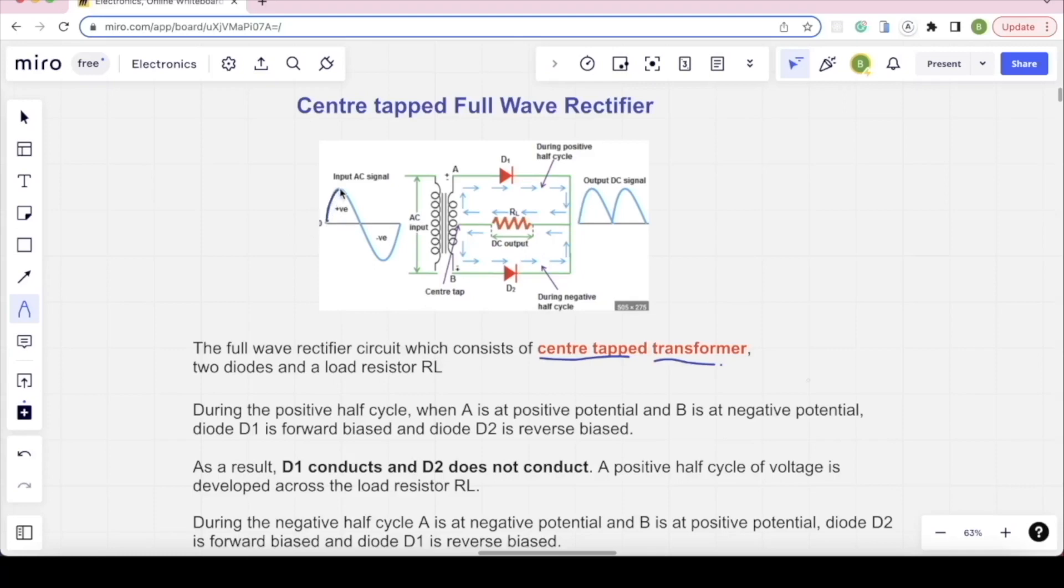For positive half-cycle, A-point is positive, B-point is negative. D1 is forward biased. During positive half-cycle, current will flow in this direction.